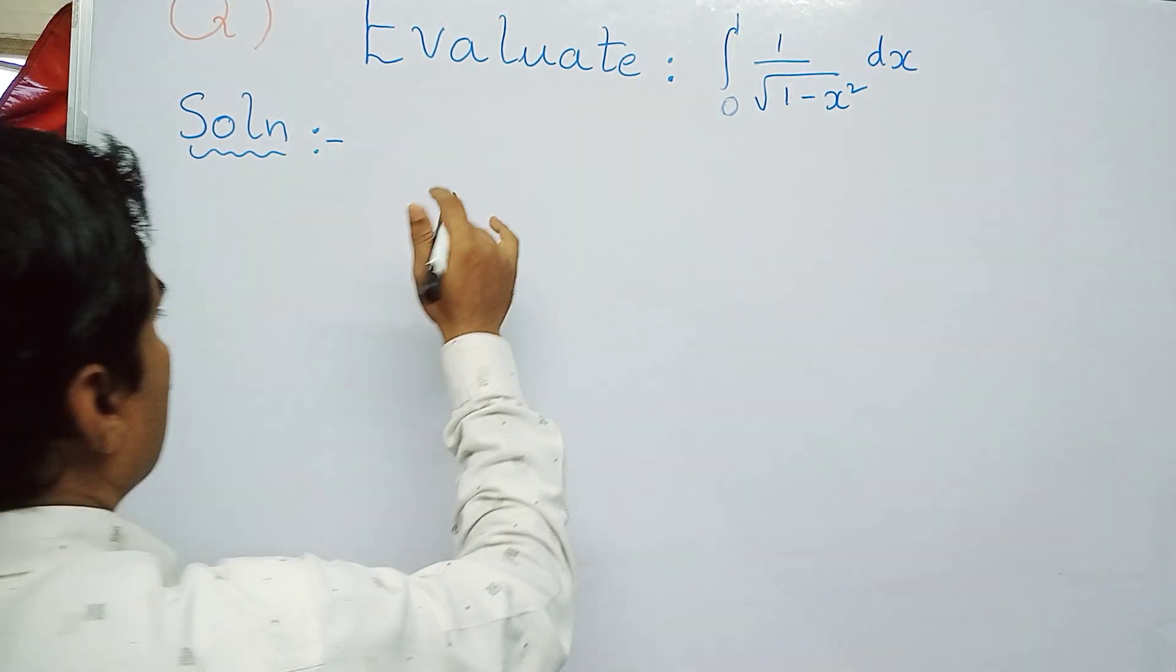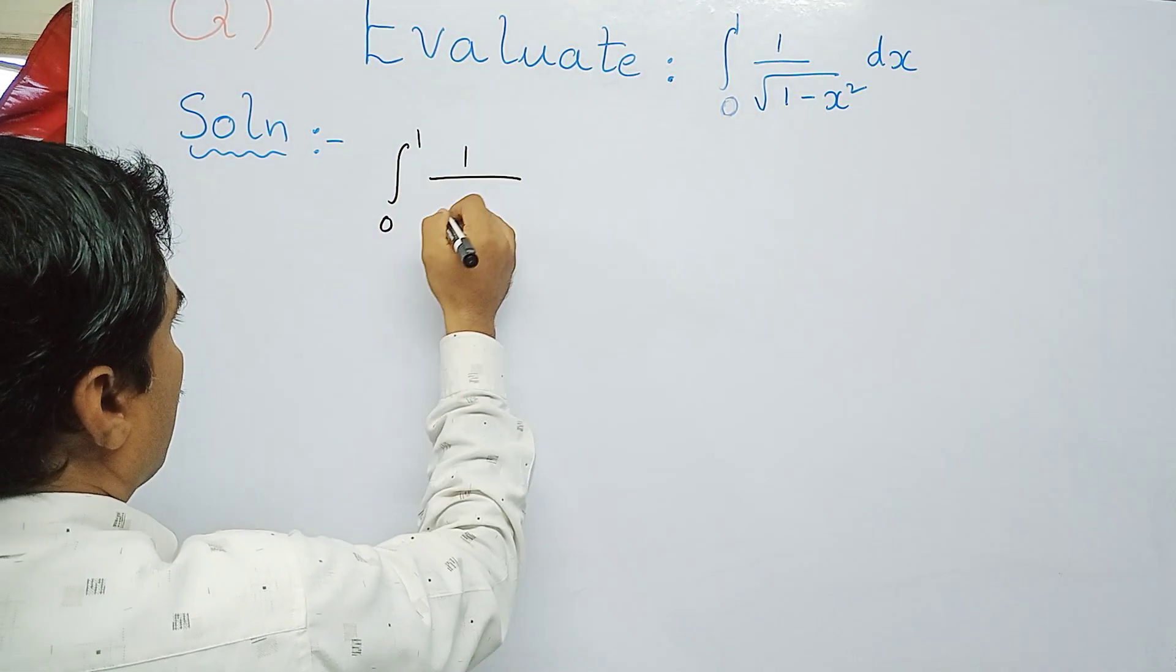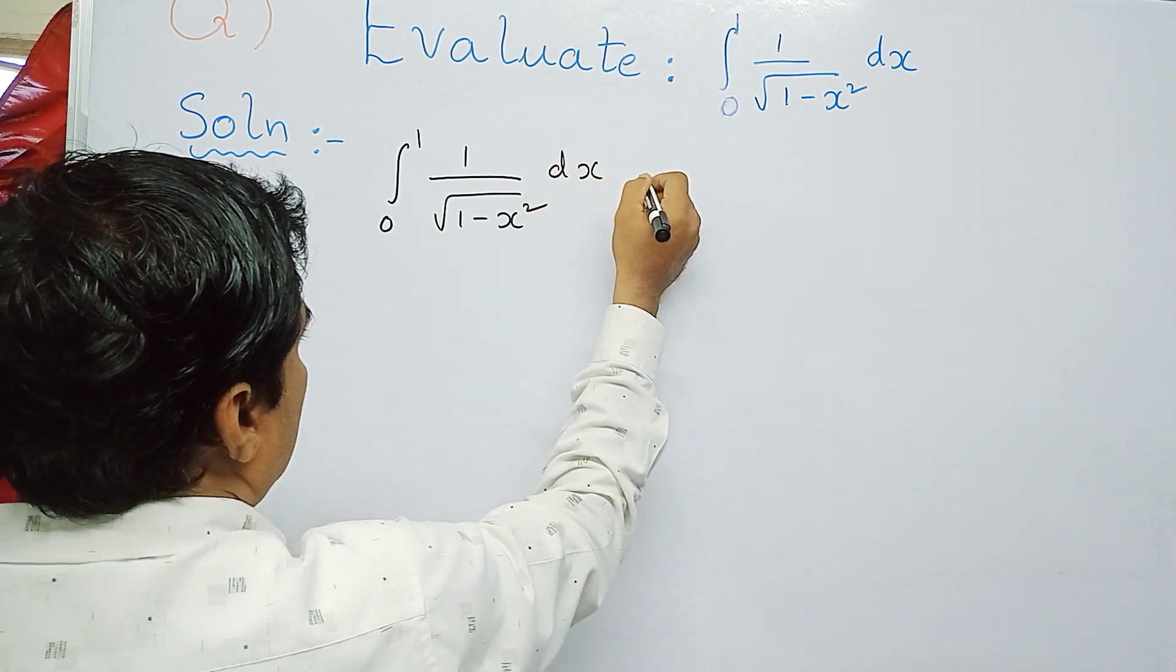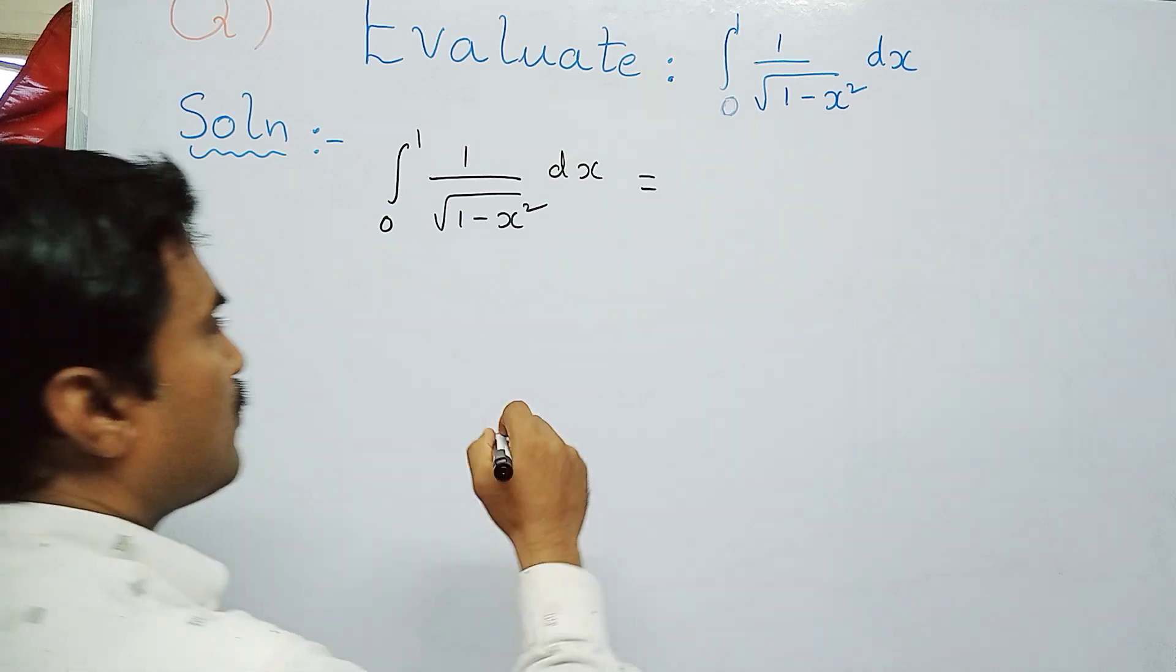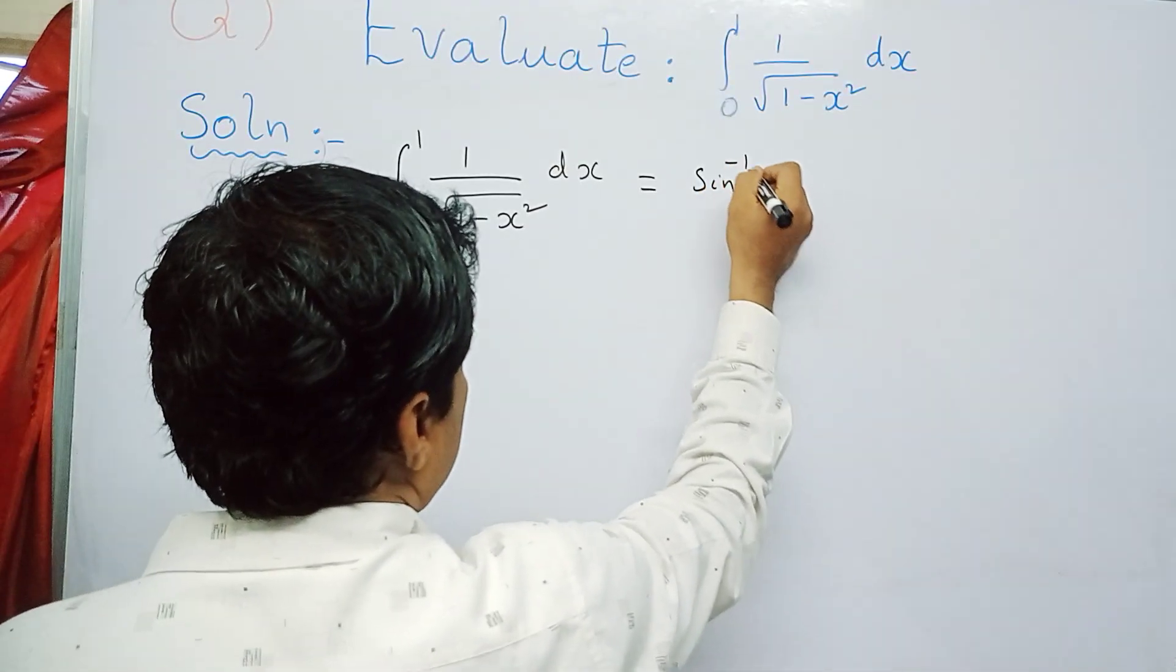First, write what is given here: integral 0 to 1, 1 by root 1 minus x square dx. As I told you before, this is nothing but a direct formula, that is sine inverse x. You can write it as sine inverse x and put the limits 1, 0.